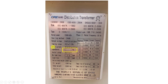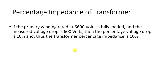On this distribution transformer nameplate, the percentage impedance is six point zero four percent. You will observe that as the voltage level increases, the percentage impedance also keeps increasing. For example, if a transformer has a rated winding voltage of 6600 volts at the primary side and the voltage drop at full load current is 600 volts, then the percentage voltage drop is 10 percent — so the percentage impedance of that transformer is 10 percent.